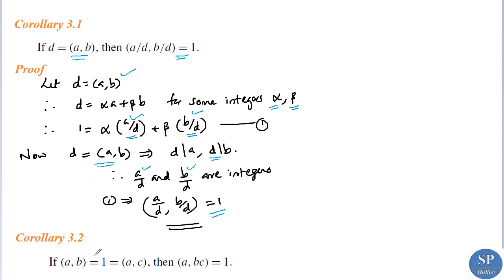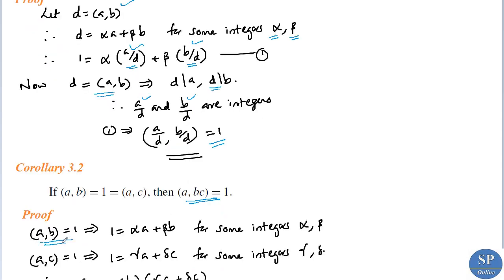The next corollary: if GCD(a, b) equals 1 and GCD(a, c) equals 1, then GCD(a, bc) equals 1. Since GCD(a, b) equals 1, there exist integers alpha and beta such that 1 equals alpha·a plus beta·b. And since GCD(a, c) equals 1, there exist integers gamma and delta such that 1 equals gamma·a plus delta·c. So 1 can be expressed as a linear combination of both pairs.